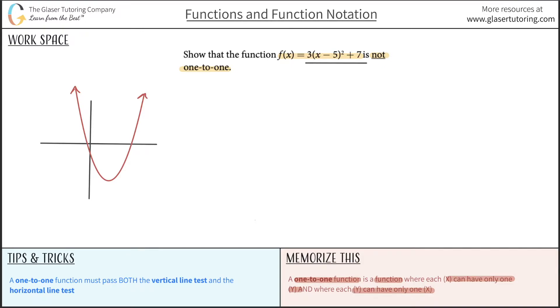In other words, a one-to-one function is at a minimum a function. Now, you have to remember, how do you test for functions? Just general functions. You use the vertical line test, VLT.